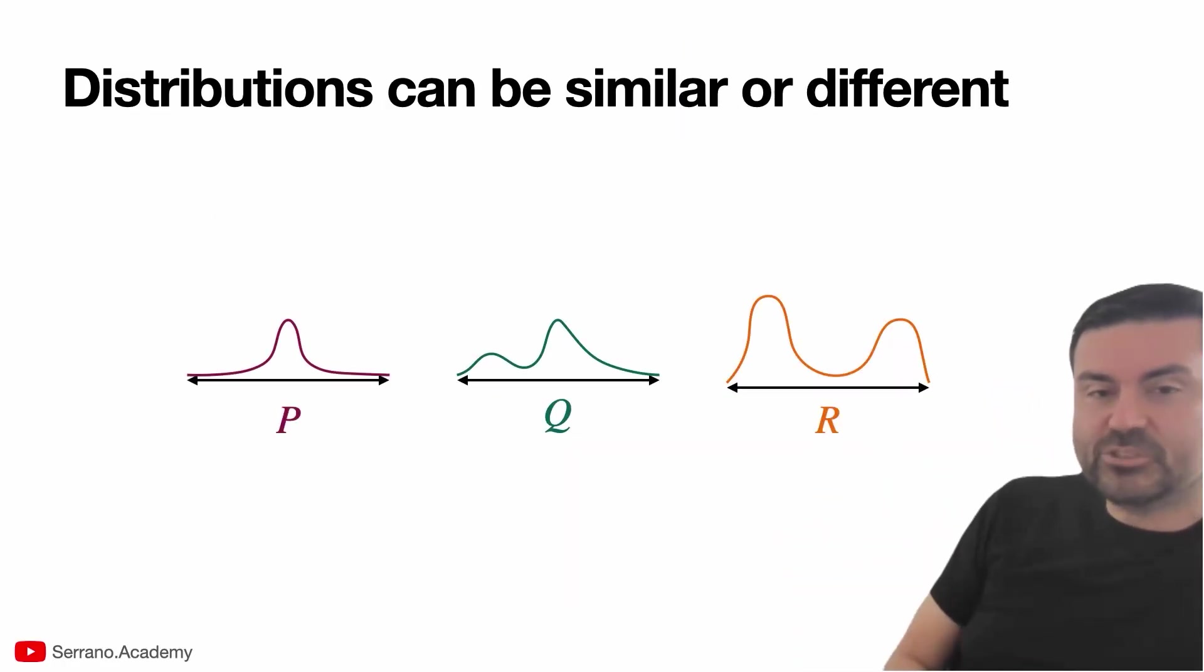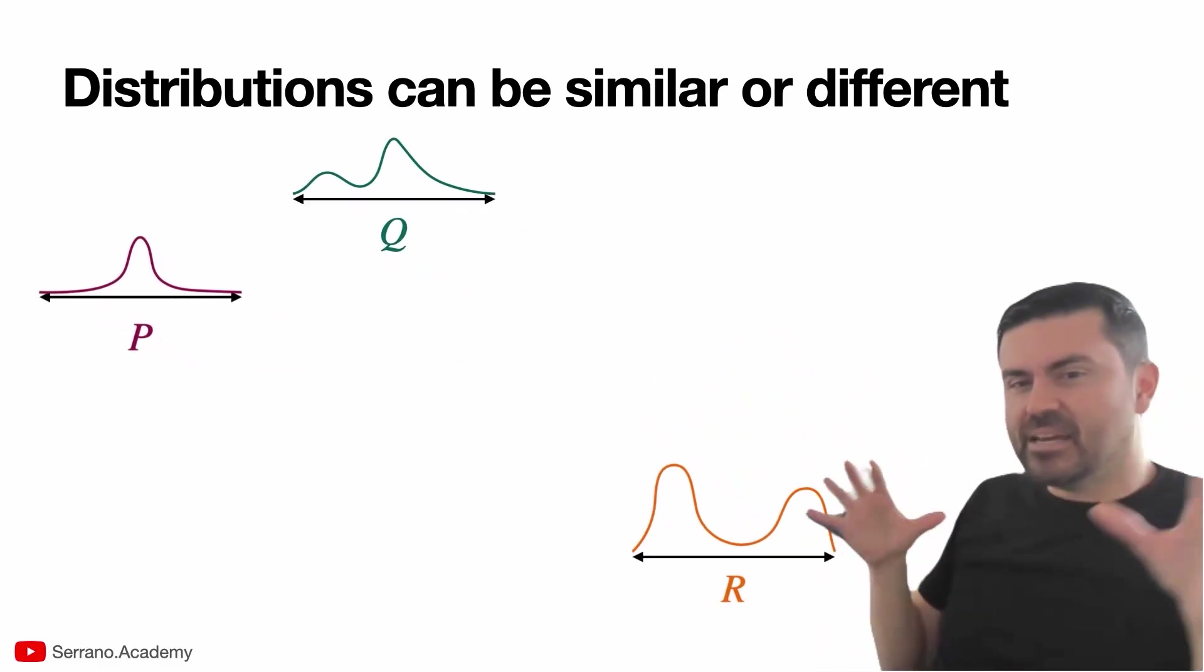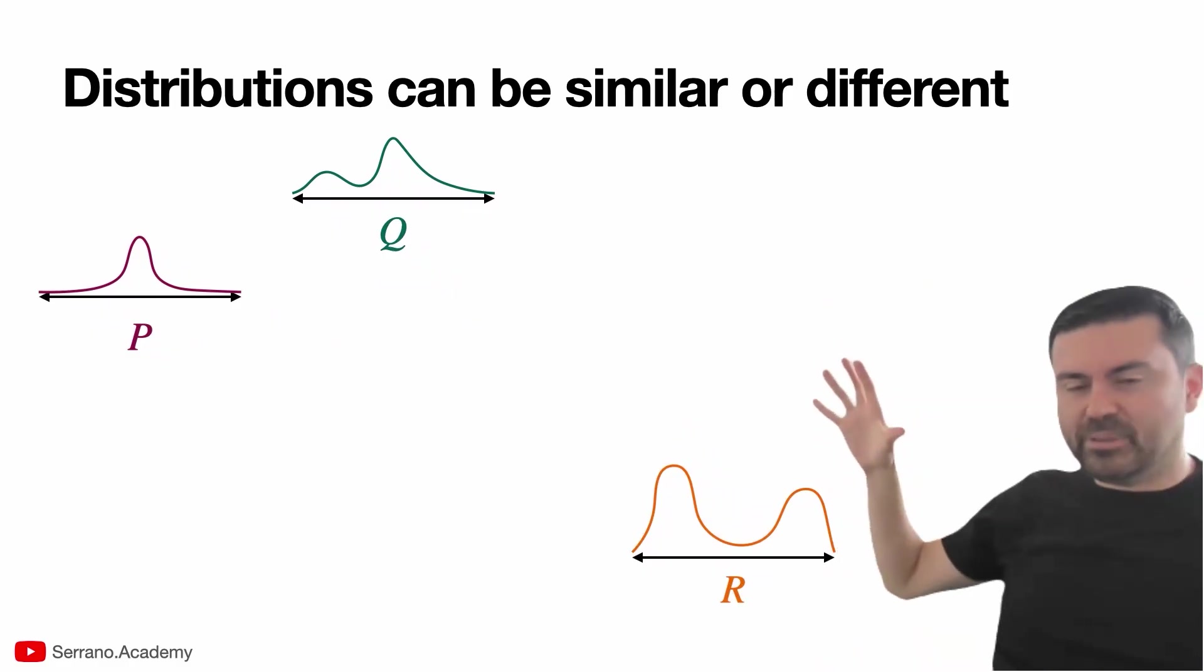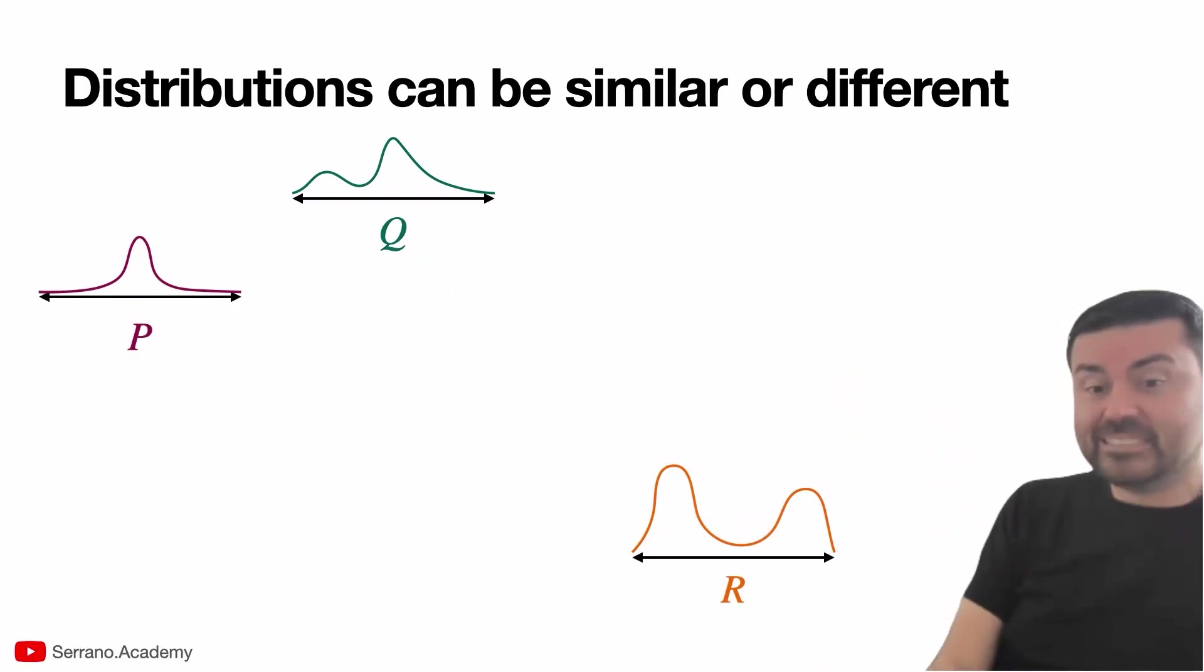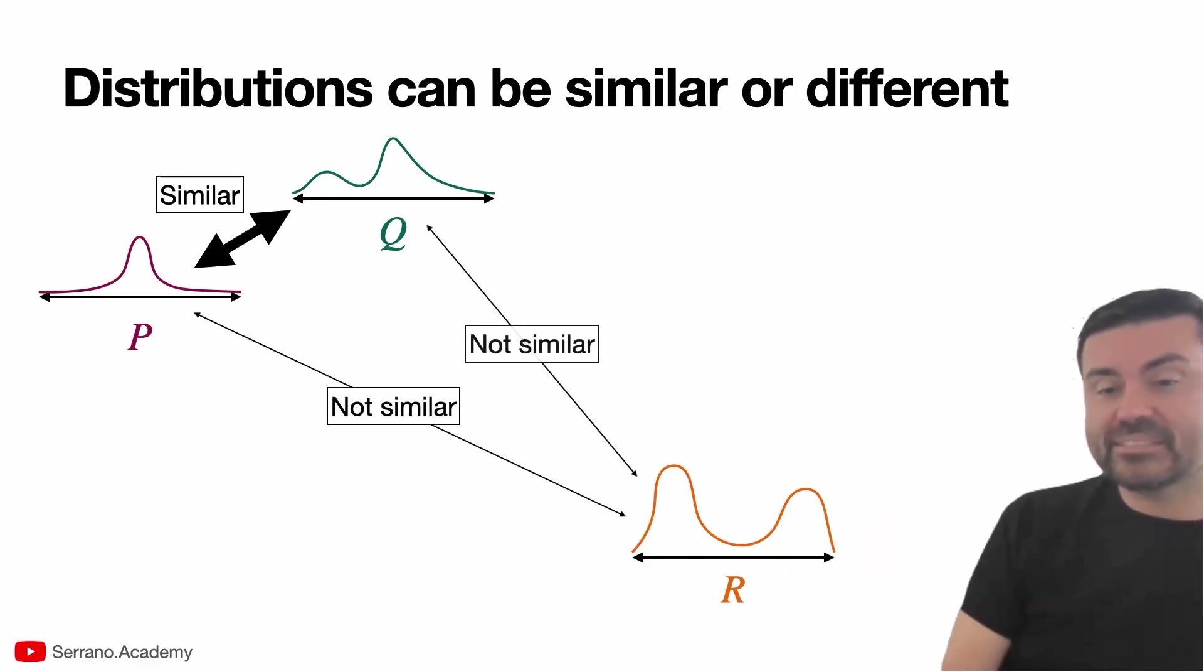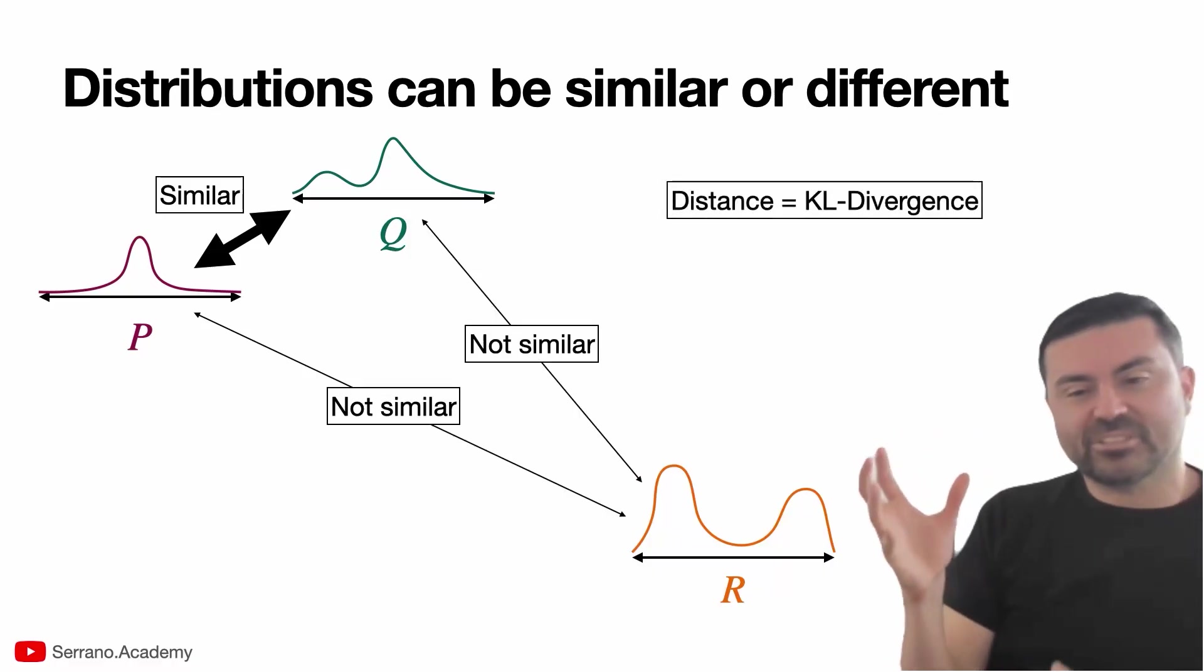As you can see, P and Q are very similar, and they're both very different from R. So the idea behind KL divergence is to think of them as points flying in the plane with distance between them. For example, P and Q are very close to each other because they're similar, and they're both far away from R because they're different from R. That's the idea behind KL divergence—it would be the distance.